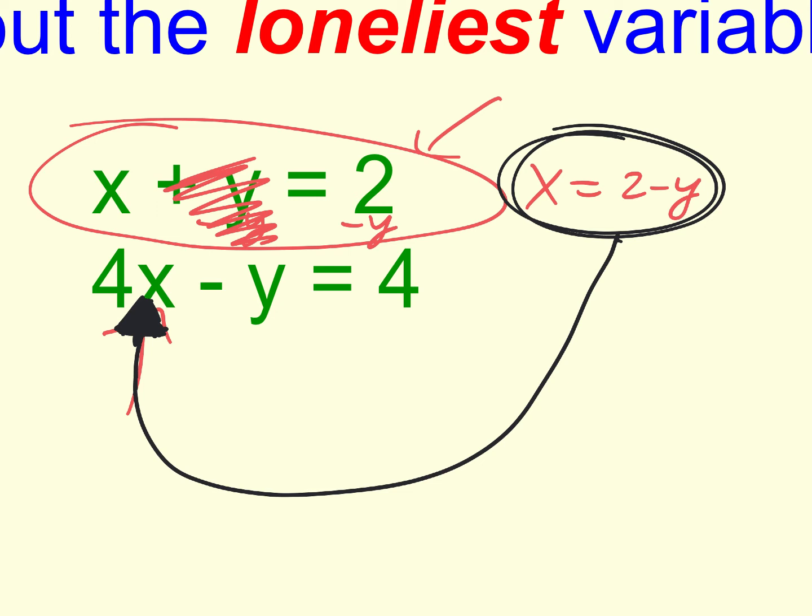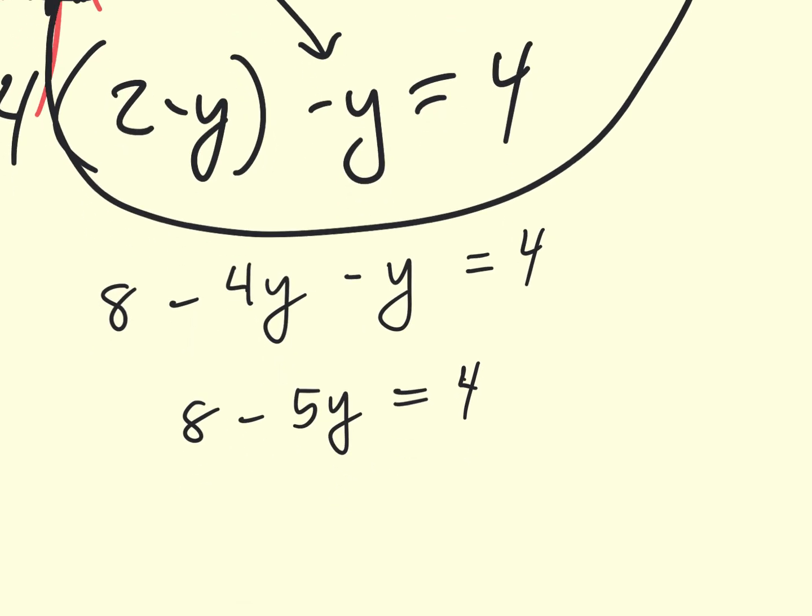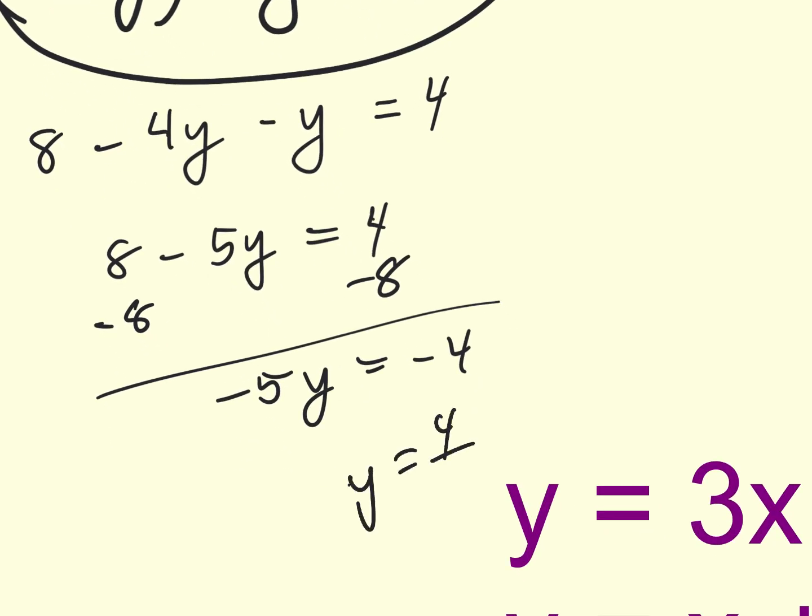So in for the x, we put 2 minus y. And then we copy the rest of the equation down here. Minus y equals 4. All right. So next up, I'm going to multiply this out. 8 minus 4y minus y equals 4. Now, I'm going to say 8 minus 5y equals 4. Now, I'm going to subtract 8 from both sides. Negative 5y equals negative 4. Then, y equals 4 fifths.